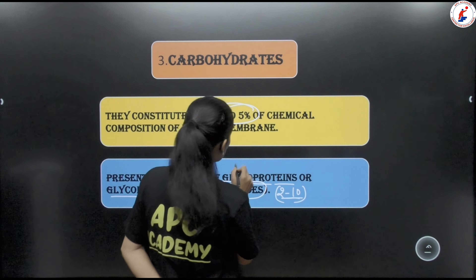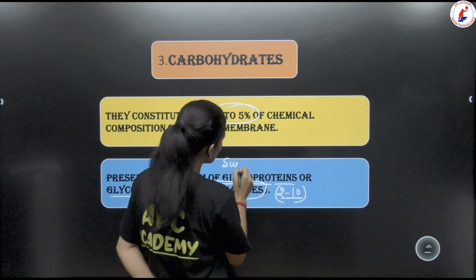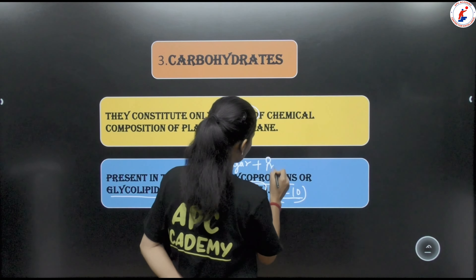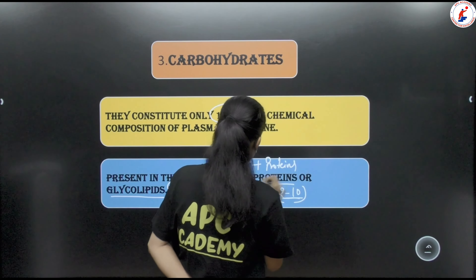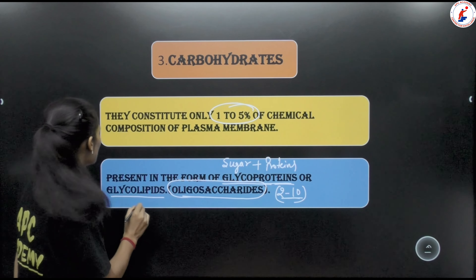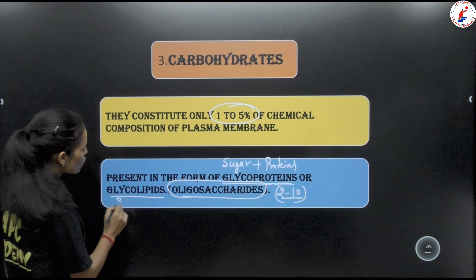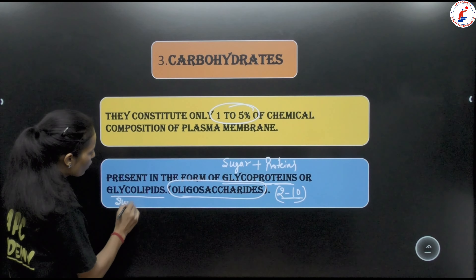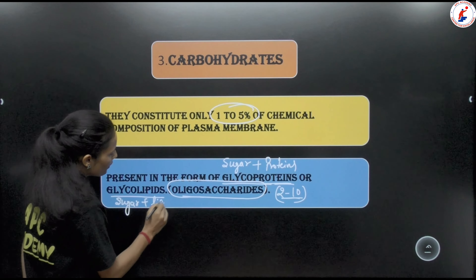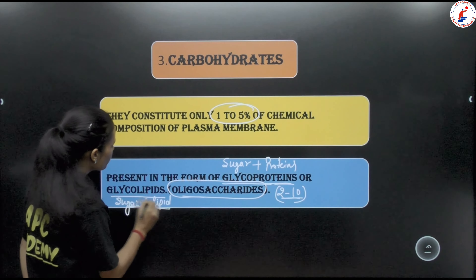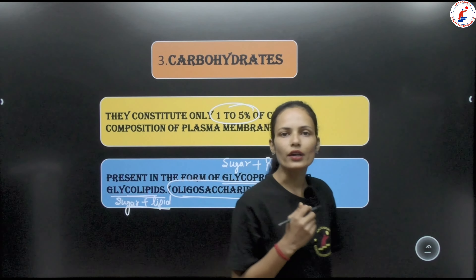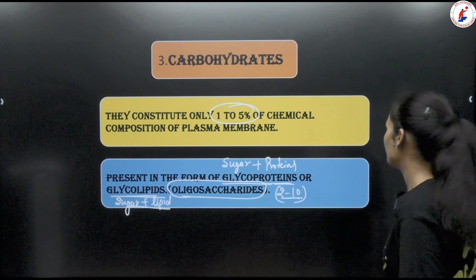Glycoproteins are formed by the association of sugar and protein. Carbohydrates are also present in the plasma membrane in the form of glycolipids, where sugar is associated with lipids.